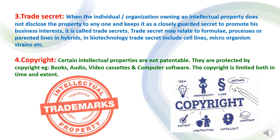The next form of intellectual property rights in agriculture is trade secrets. When an individual or organization owning an intellectual property does not disclose it to anyone and keeps it as a closely guarded secret to promote business interest, it is called a trade secret. Trade secrets may relate to formulas, processes or parental lines in hybrids. In biotechnology, trade secrets include cell lines, microorganisms, and so on. The next form is copyright. Certain intellectual properties are not patentable and are protected by copyrights — for example, books, audio and video cassettes, and computer software. The copyright is limited both in time and extent.